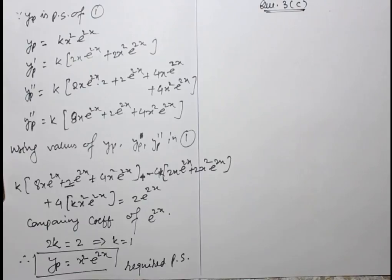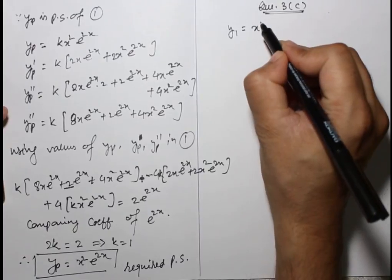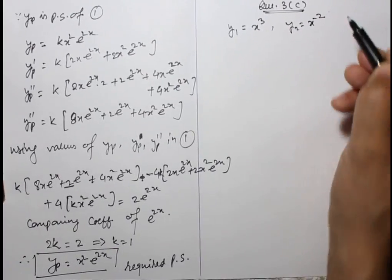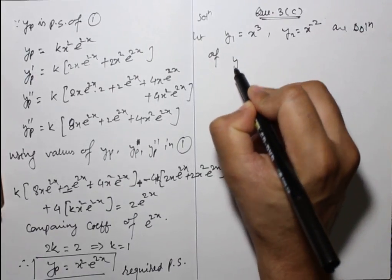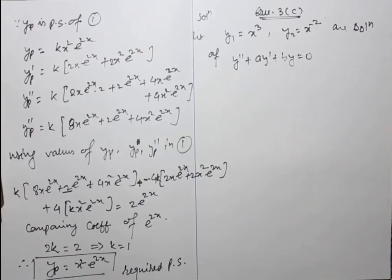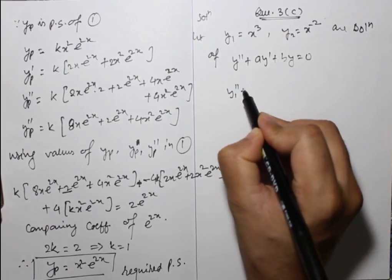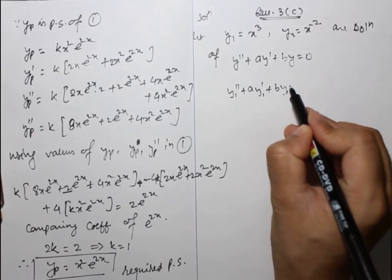This is question number C. Find a homogeneous linear ordinary differential equation for which the two functions x³ and x^(-2) are solutions, and verify linear independence by computing their Wronskian. The two solutions are y1 = x³ and y2 = x^(-2). Substituting y1 into the general equation y'' + a·y' + b·y = 0.